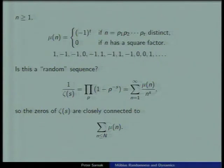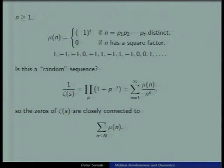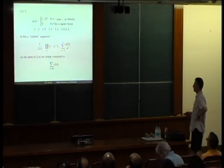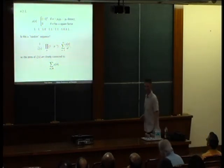Formally, the Riemann zeta function is the product over p of (1 − p^{−s})^{−1}, so one over the Riemann zeta function is this Euler product. When you multiply it out and collect terms, it defines the Möbius function — so 1/ζ(s) has coefficients which are the Möbius sequence. By simple complex analysis, questions about where zeta has zeros — the poles of 1/ζ — are clearly controlled by the cancellation in mu(n). If you sum mu(n) up to N and ask how much cancellation there is in that sum...